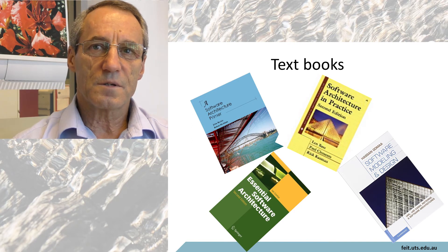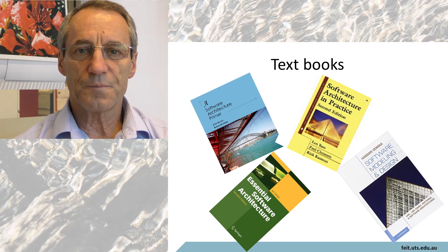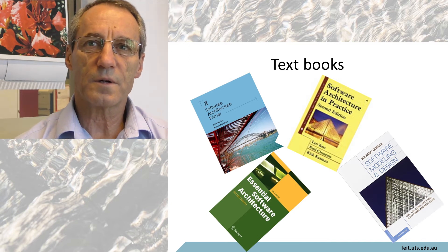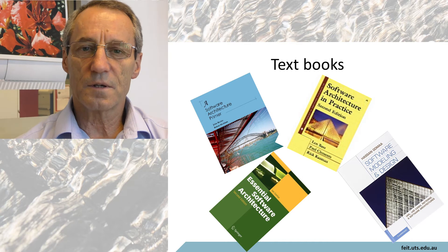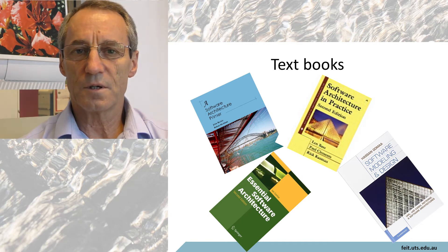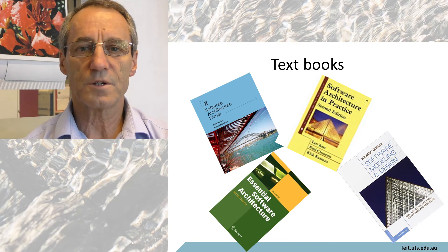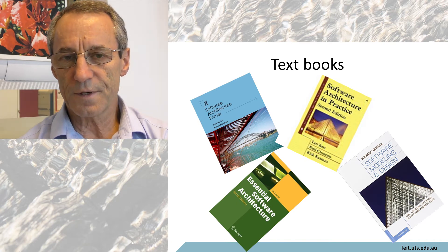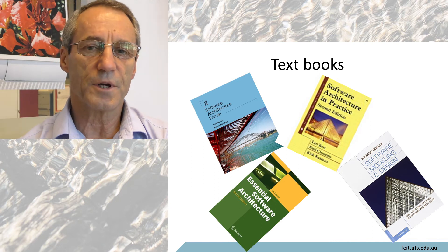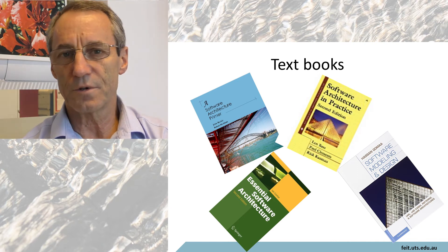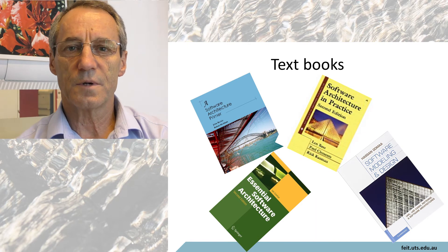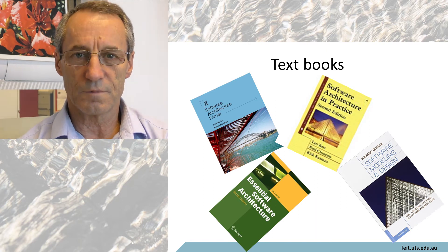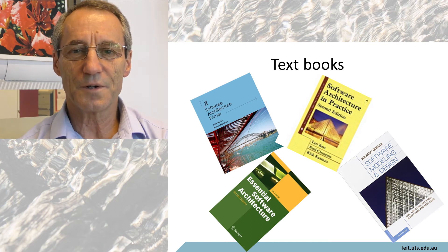The classic that just about everybody cites as the book on software architecture is Software Architecture in Practice. I have the second edition, but I gather there's a third edition out now that has some minor modifications to it. This book is by Bass, Clements and Kasman. These three all work for the Software Engineering Institute at Carnegie Mellon University, where Mary Shaw runs a very good subject on software architecture. So they knew their stuff, and it's a pretty good book.